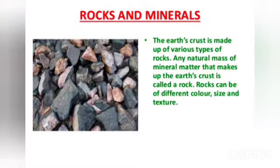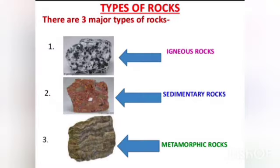Earth's crust is made up of various types of rocks. Any natural mass of mineral matter that makes up the earth's crust is called a rock. Rocks can be of different color, size, and texture. There are three different types of rocks: igneous rocks, sedimentary rocks, and metamorphic rocks.